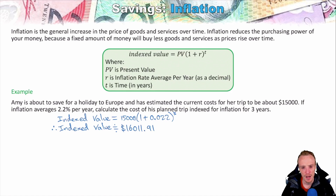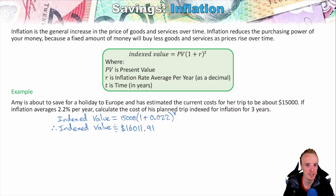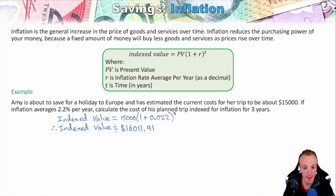You might ask at this point: why would we bother indexing something for inflation? Well, Amy needs fifteen thousand dollars today to go to Europe, but Amy has to save up for it, and it's going to take three years. So Amy needs to consider how much the trip is going to cost in three years' time — not just today — because that's when she'll need the money. In three years' time, that cost is going to be sixteen thousand dollars. If Amy only sets her target at fifteen thousand, she's not going to have enough money to go to Europe. That's why it's really important to index things for inflation when thinking about saving for something.